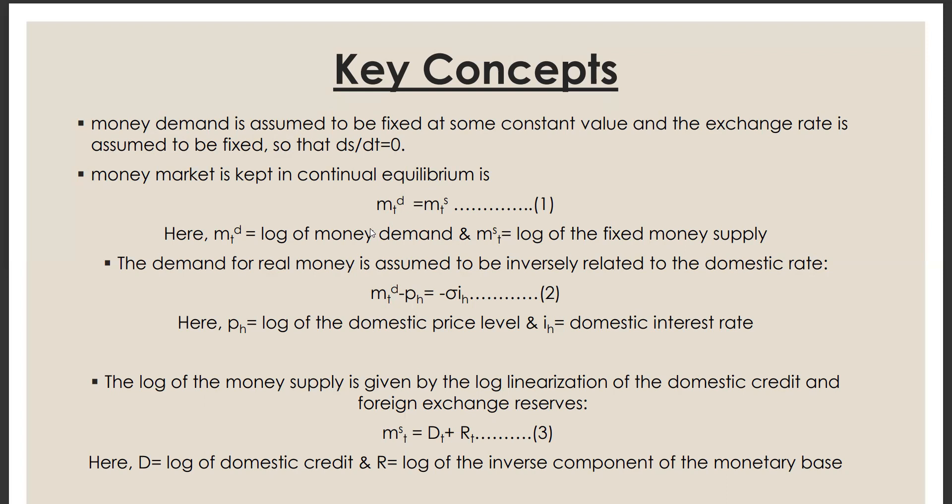Again, the log of the money supply is given by the log linearization of the domestic credit and foreign exchange result, which is indicated by equation three. Here we have written MTD, where we have written MTD is equal to DT plus RD. Here DT is the log of domestic credit and RD is the log of the inverse component of the monetary base.